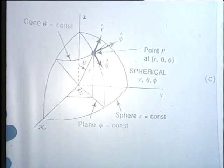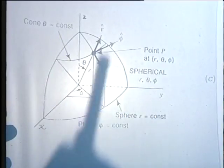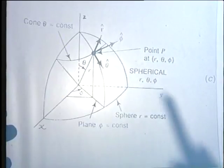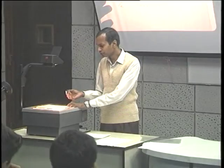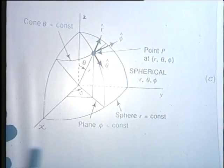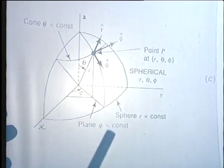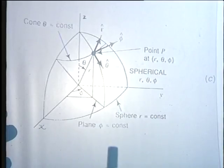The unit vectors are r̂, θ̂, and φ̂. r̂ points radially outward from the origin; θ̂ is normal to r̂, tangential to the sphere, and points in the direction of increasing θ; φ̂ is normal to the plane of r̂ and θ̂ and points in the direction of increasing φ. These three are mutually orthogonal. Importantly, unlike the fixed x, y, z directions in Cartesian coordinates, these directions change depending on the values of θ and φ.